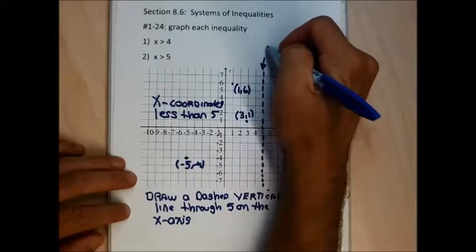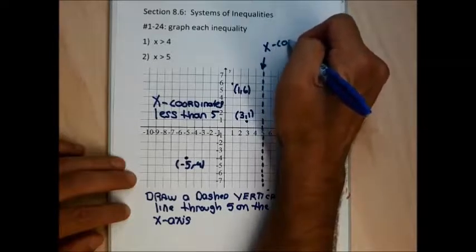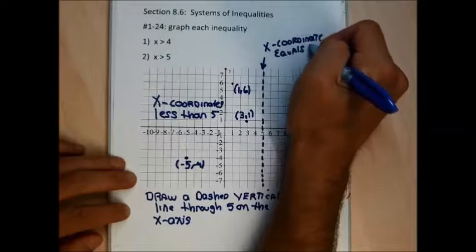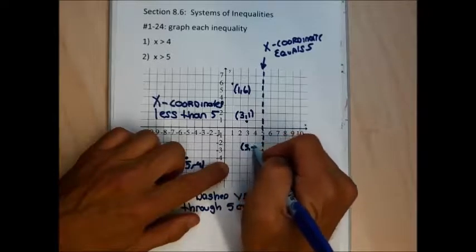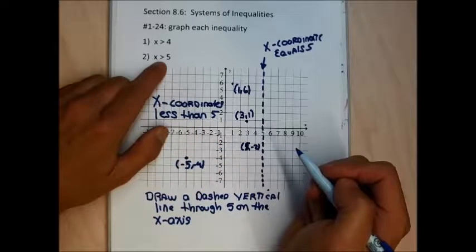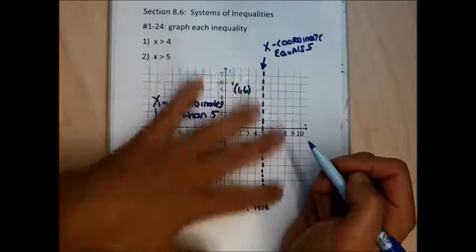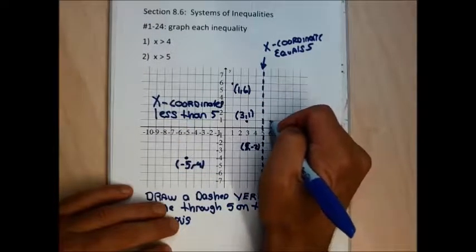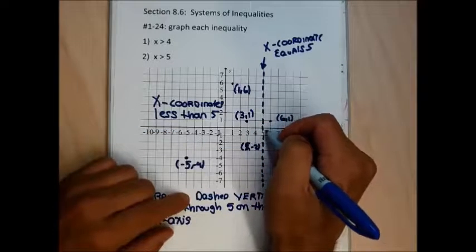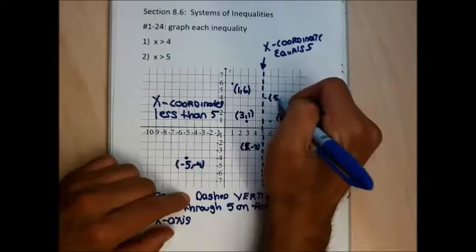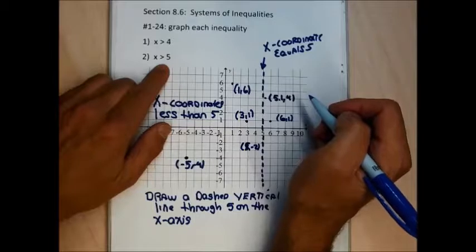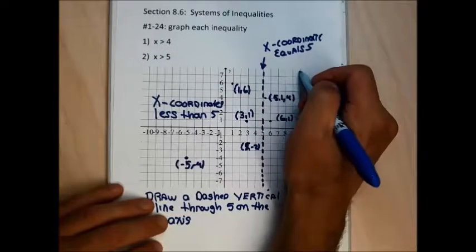Every point on the line has an x-coordinate equal to 5, and it shouldn't be included in my answer. For instance, the point 5, negative 2 has an x-coordinate equal to 5, and I'm only trying to identify points with x-coordinates greater than 5. But any point to the right of this line — like the point 6, 1 or the point 5.1, 4 — has an x-coordinate bigger than 5 and needs to be included.